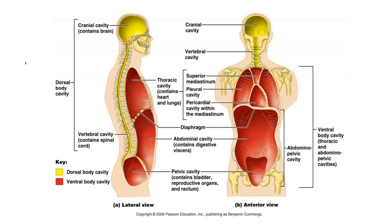Next we are going to talk about body cavities. There is the word dorsal and ventral. Dorsal means the posterior part; ventral means anterior. The dorsal body cavities contain two cavities: the cranial cavity, which contains the brain, and the vertebral cavity, which contains the spinal cord.